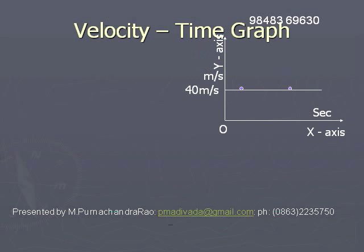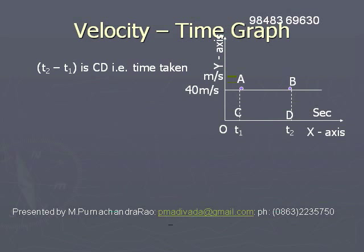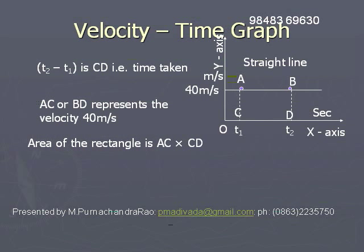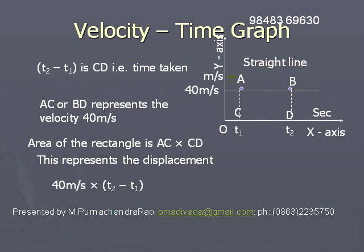In general, if we consider two points A and B on this curve and draw the ordinates AC and BD, where C is at time T1 and D is at time T2, then T2 minus T1 is the time interval, represented by CD. AC or BD represents the constant velocity. The area of rectangle ABCD, given by AC multiplied by CD, equals the displacement: 40 meters per second multiplied by (T2 minus T1) seconds.